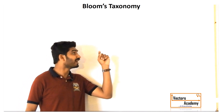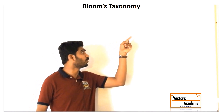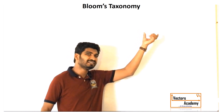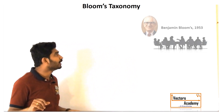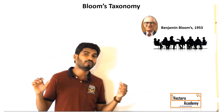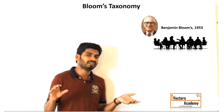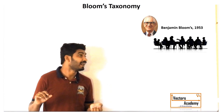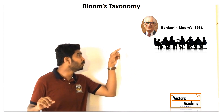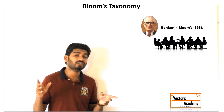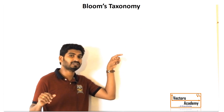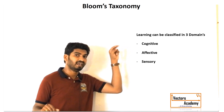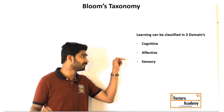Now let's have a look at Bloom's Taxonomy. Taxonomy basically means classification. In 1953, a group of educators sat together to form a committee, with Benjamin Bloom as the head of the committee. What they did is they sat together and classified learning in three different aspects: Cognitive, Affective, and Sensory.